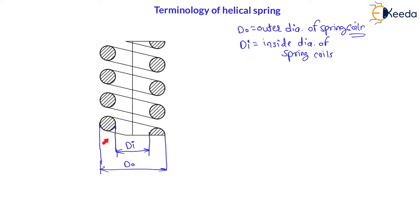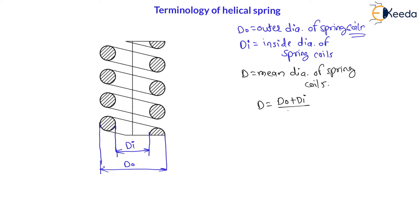As there is outside diameter and inside diameter, there must be a mean diameter. Therefore, let us say D is the mean diameter of spring coils. This mean diameter will be outside diameter plus inside diameter divided by 2. If I want to represent this mean diameter, I will find it exactly at the mean of this spring. This diameter is called mean diameter of the spring.